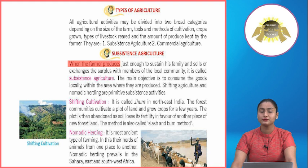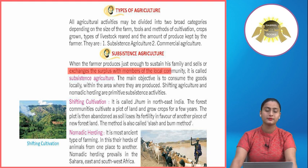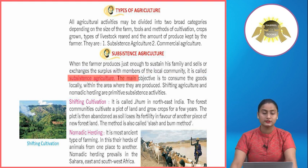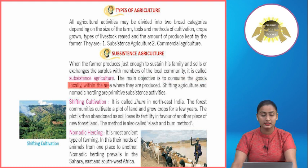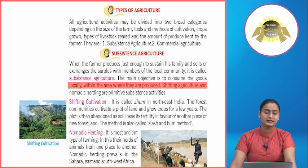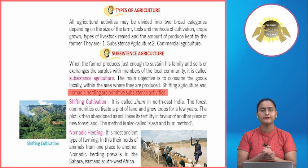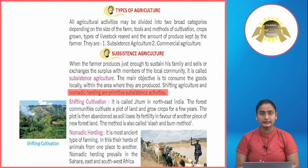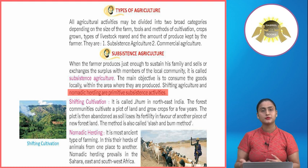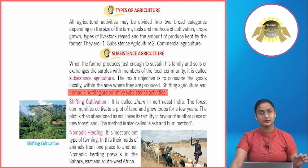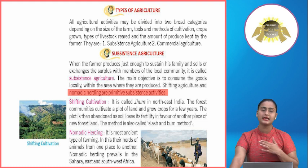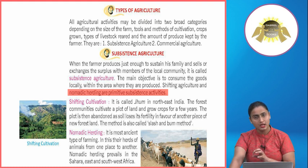Subsistence agriculture: When the farmer produces just enough to sustain his family and sells or exchanges the surplus with members of the local community, it is called subsistence agriculture. The main objective is to consume the goods locally within the area where they are produced. Shifting agriculture and nomadic herding are primitive subsistence activities. The farmer grows only as much as is required to sustain his family, and any small surplus is exchanged within the local community.